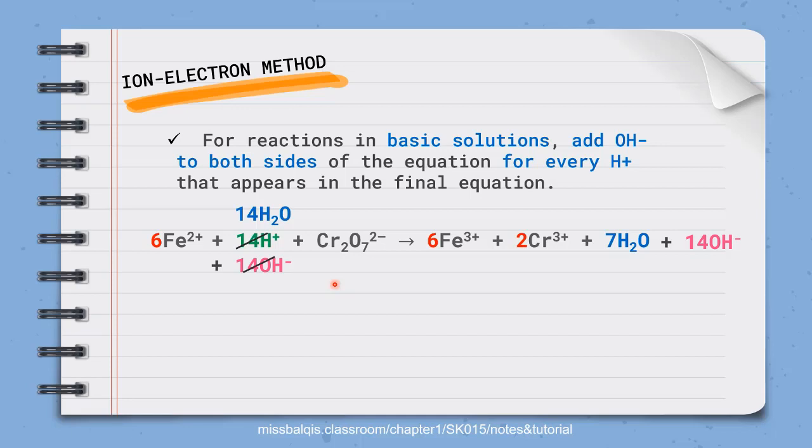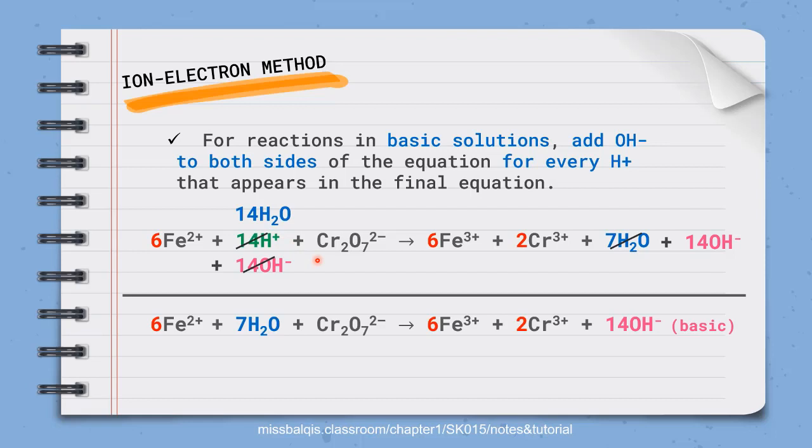As I mentioned earlier, if we have the same species on both sides, they can be canceled, even though the number is not the same. We have 14 water molecules on the left and 7 water molecules on the right. So 14 will minus 7. We are left with only 7 water molecules on the left. Lastly, it can be concluded that 6 Fe2+ plus 7 H2O plus Cr2O7 2- to become 6 Fe3+ plus 2 Cr3+ plus 14 OH- is the net equation in basic medium. So it is basic because it has 14 OH- in the net equation.